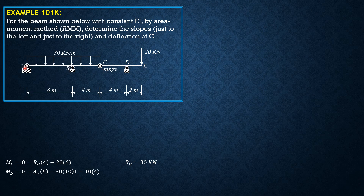Then taking summation of moments at B to solve for A_y, considering segment ABC. Note that there is 10 downward at the hinge and also 10 upward just to the left of C. So: A_y times 6 minus 30 times 10 times (half of 10 is 5, so the arm is 1·5 minus 4) plus 10 upward — which is counterclockwise — so minus 10 times 4 equals zero. Therefore A_y equals 170/3 kilonewtons.